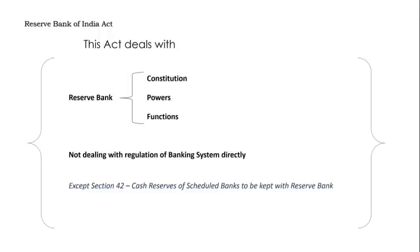This act led to the creation of Reserve Bank of India. It defines what RBI is, its authority scope, its powers, its functions as a financial body in the Indian system, and its constitution. This act does not really deal with the regulation of the banking system directly in our country, except for a few sections here and there — like Section 42, about the maintenance of cash reserves of scheduled banks with the RBI. This happens in a format called currency chests and other reserve ratios, which we will discuss in detail as we move on.